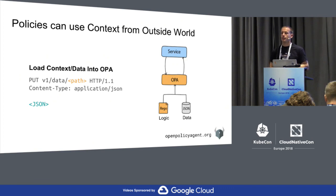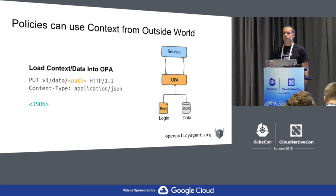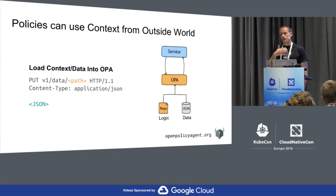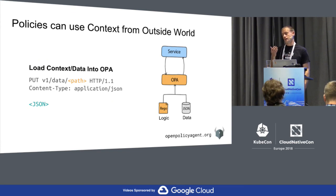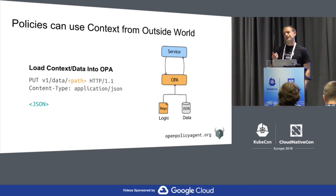Have we thought about adding documentation functionality so that somebody who doesn't know the internals of a policy can understand its semantics? Yes, this is something on the list — it'd be great to have something like Javadoc functionality where as you write policy, you annotate it and the tool spits out nice docs. That's just on the list; it hasn't been done yet. We love contributions. There is also functionality inside OPA to give you a trace of the decision that was made, and we've tried to prune that trace down to the minimal information you need to understand why the decision was made the way it was.